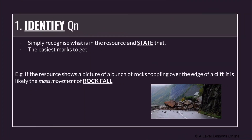The first type of question is an identify question. Identify questions are very simple — one or two marks. All you need to do is recognize what the question is asking and state the answer. Just look at the resource or extract and present it as your answer. For instance, if the resource shows rocks toppling over the edge of a cliff, it's most likely a rock fall or rock slide — just put that in and get your marks.